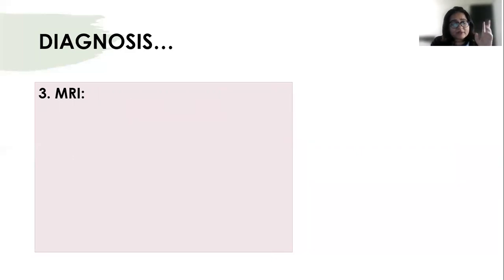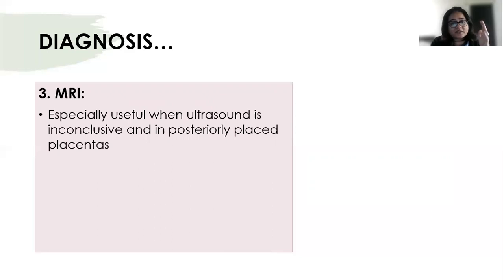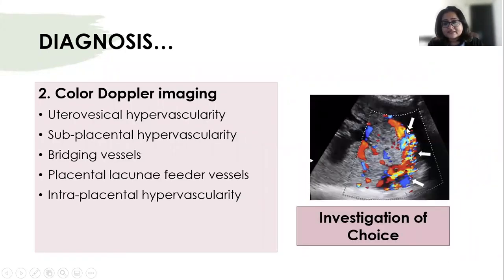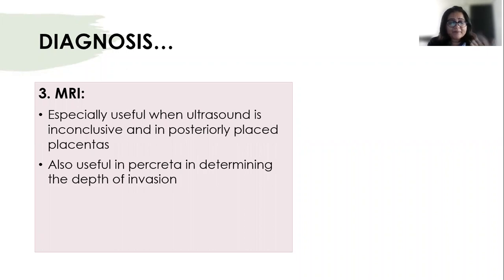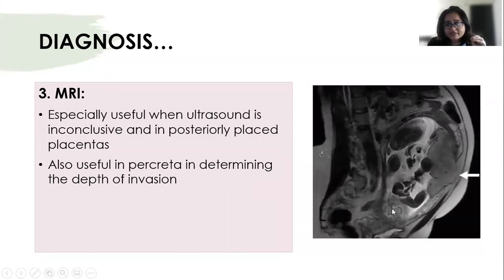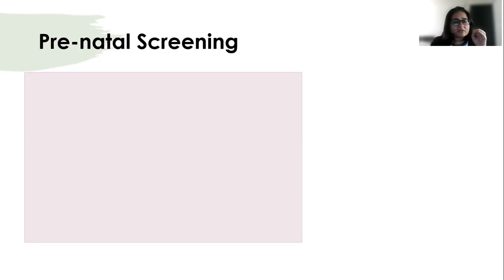MRI is useful but is not the investigation of choice — this is where many get confused. MRI is useful when ultrasound is inconclusive and for posteriorly placed placentas, which are difficult to visualize on ultrasound since sound rays reflect back making posterior imaging difficult. MRI is also useful when you need to determine the exact depth of invasion in percreta before surgery. On MRI you can see the placental bulge inside the bladder.